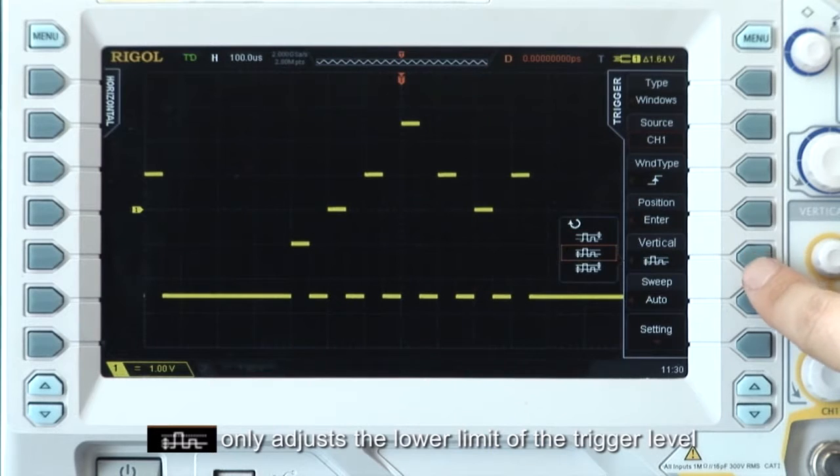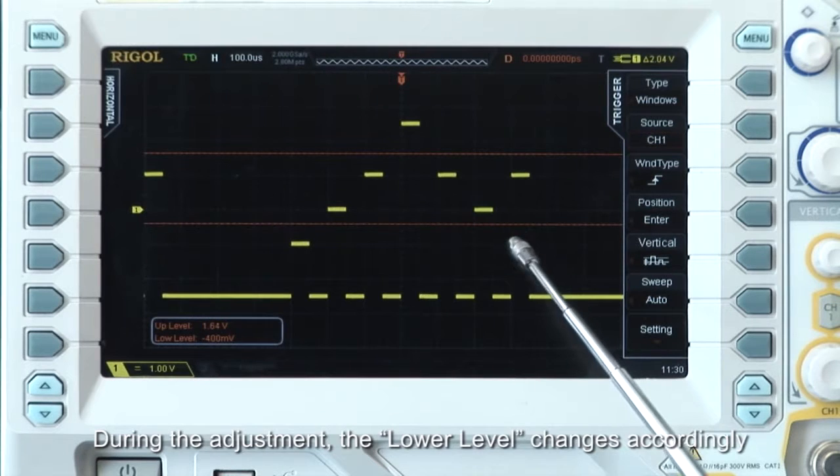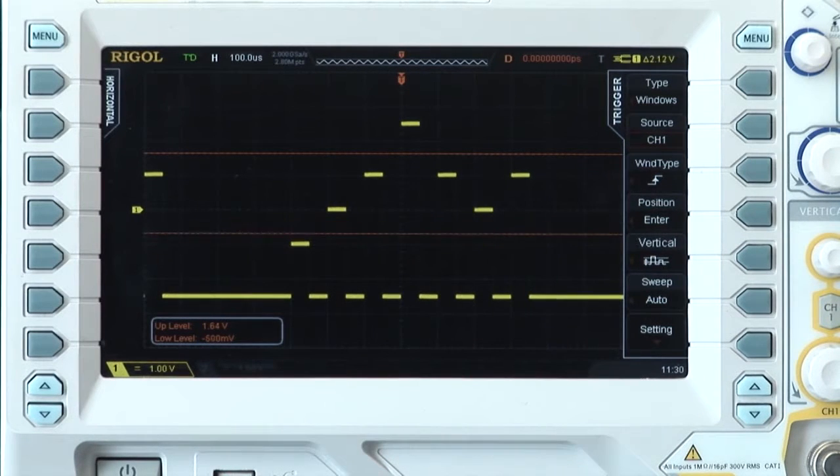With the lower limit, we'll only adjust the lower limit of the trigger level. During the adjustment, the lower level changes accordingly, and the upper level remains unchanged.